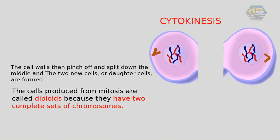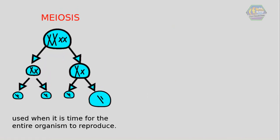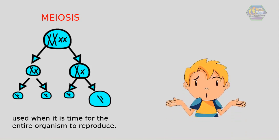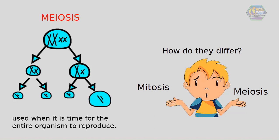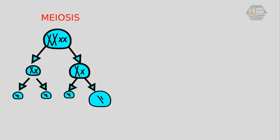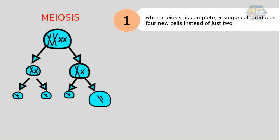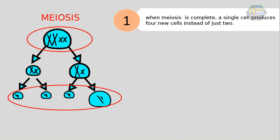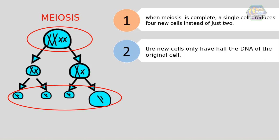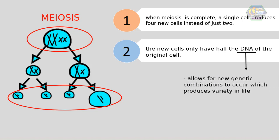Now the next one — meiosis. Meiosis is used when it is time for the entire organism to reproduce. Mitosis and meiosis sound alike, but how do they differ? First, when meiosis is complete, a single cell produces four new cells instead of just two. The second difference is that the new cells only have half the DNA of the original cell. This allows for new genetic combinations to occur, which produces variety in life.